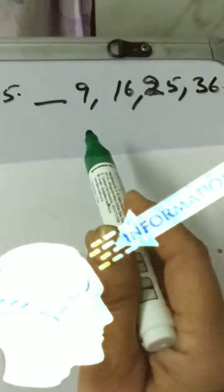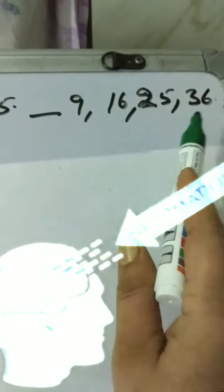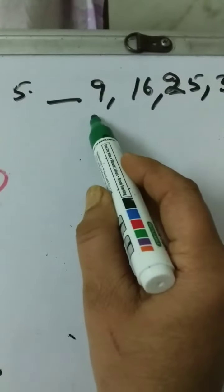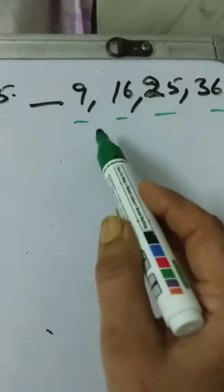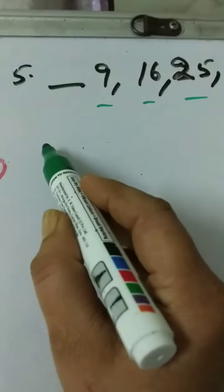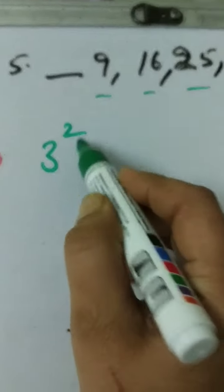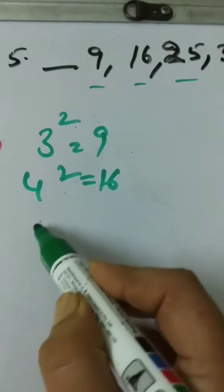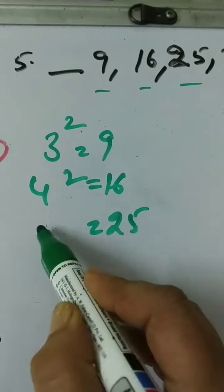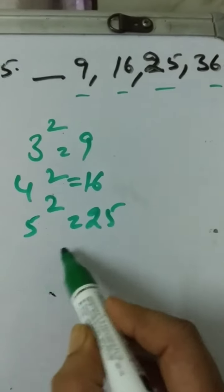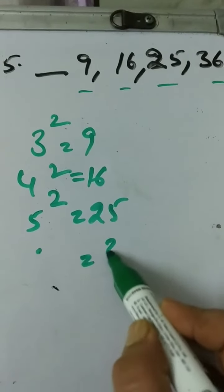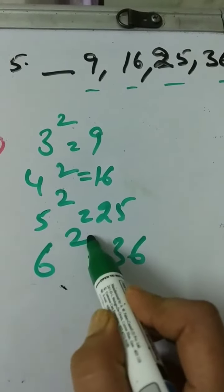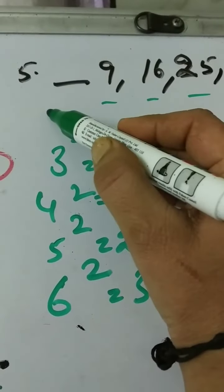Fifth one: dash, 9, 16, 25, 36. If you see these digits, these are the squares of numbers. 9 is the square of 3, 16 is the square of 4, 25 is the square of 5, and 36 is the square of 6. It means the first digit is the square of 2, so the answer is 4.